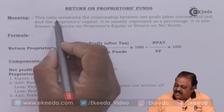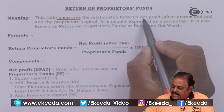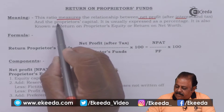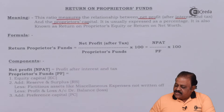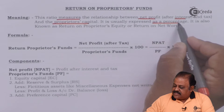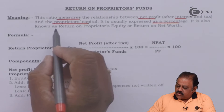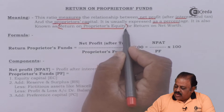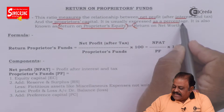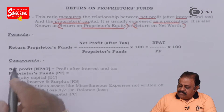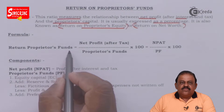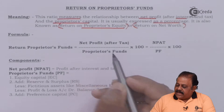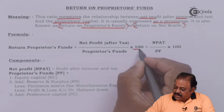This ratio measures the relationship between net profit after interest and tax and the proprietor's capital. It is also known as return on proprietors equity or return on net worth. The formula is: net profit after tax divided by proprietors fund, multiplied by 100.